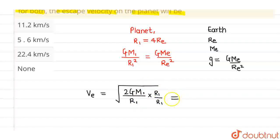So this will be equals to root over 2Gm1 divided by R1 square into R1.